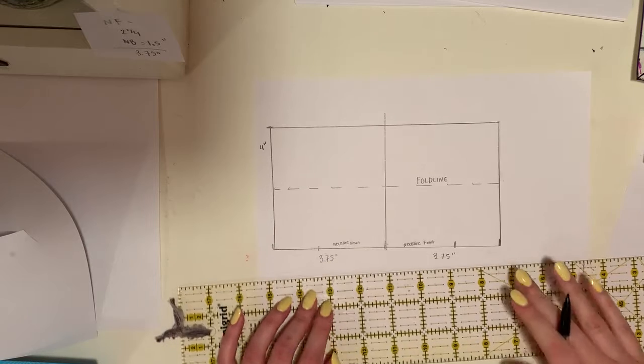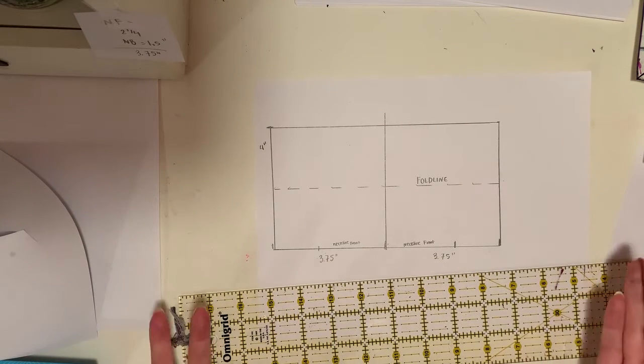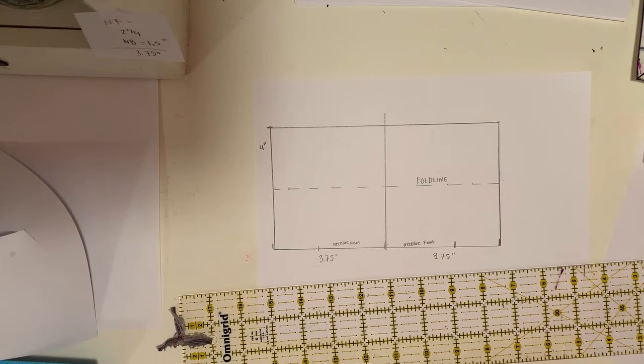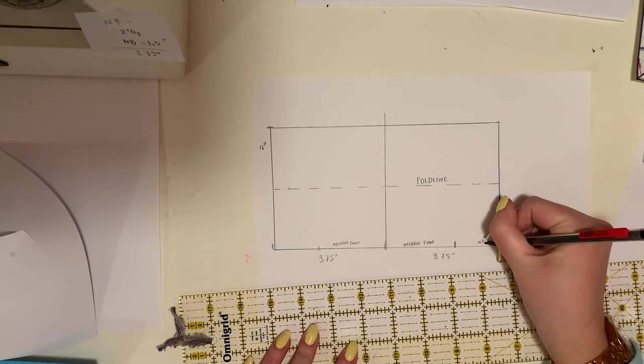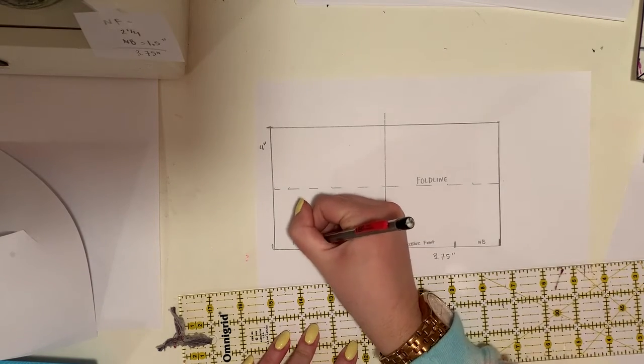And then we don't have to do the neckline back, but you can go ahead and write that if it's going to make it easier. You can do NB because that will pretty much be a giveaway on what that measurement is.